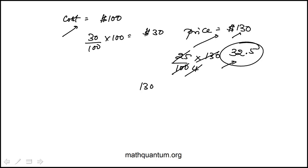And I'm going to subtract that from $130, and it's going to give me $97.50. So that would be the discounted price, which is choice A.